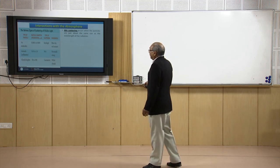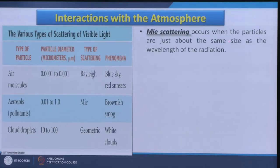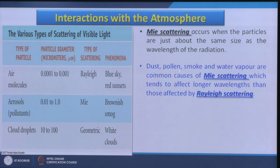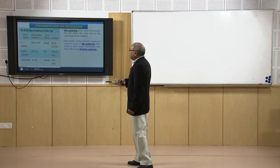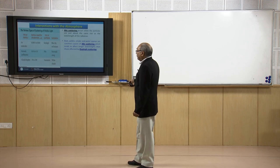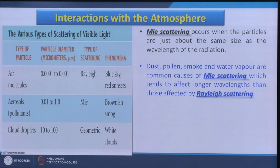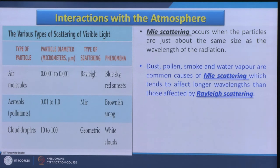The second type of scattering is Mie scattering, which occurs when particles are just about the same size as the wavelength of the radiation. Dust, pollen, smoke and water vapor are common causes of Mie scattering, which tends to affect longer wavelengths than those affected by Rayleigh scattering. Rayleigh scattering always affects shorter wavelength bands. With aerosols now widely present, particle sizes are larger and Mie scattering occurs at longer wavelengths, creating brownish effects or smog phenomena observed during winter seasons.